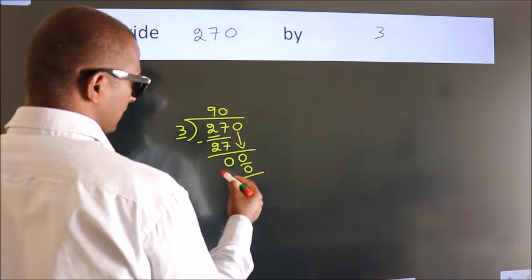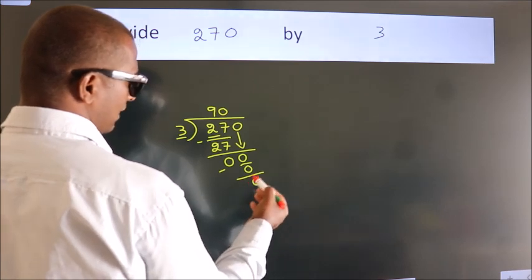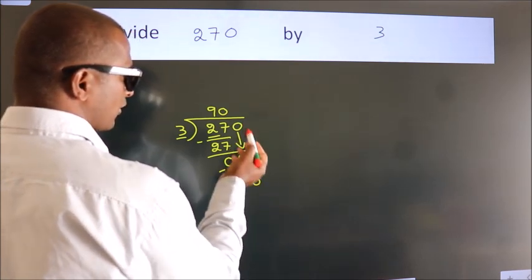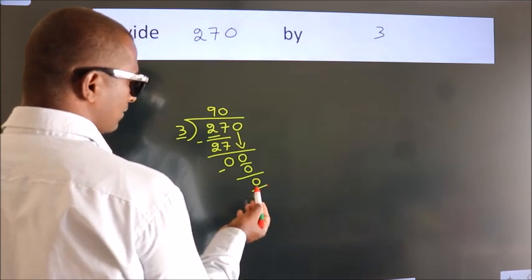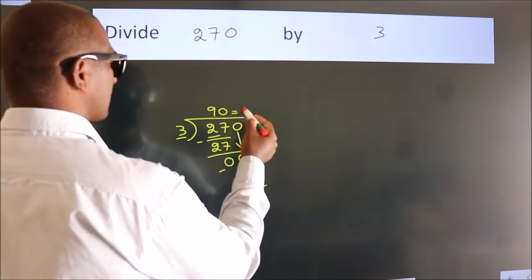Now, we subtract. We get 0. After this, no more numbers to bring it down. And, we got remainder 0. So, this is our quotient.